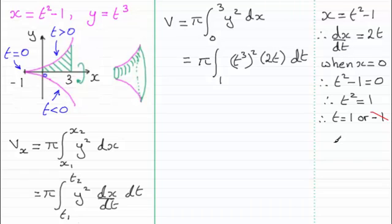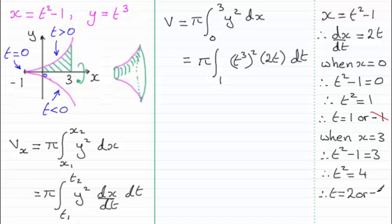So we now need to find the corresponding value of t when x equals 3. So when x equals 3, let's put that in. We've got 3 equals t squared minus 1, or t squared minus 1 equals 3. So adding 1 to both sides gives me t squared equals 4. And if I take the square root of both sides, I end up with t equaling plus or minus 2, t or minus 2, I should say, or minus 2.